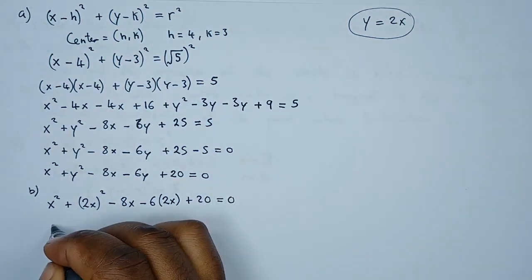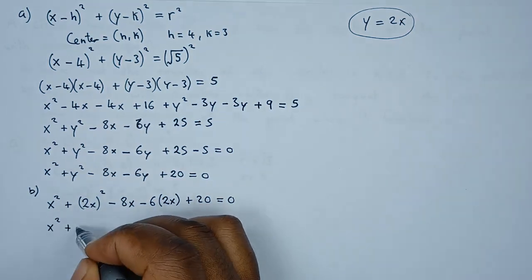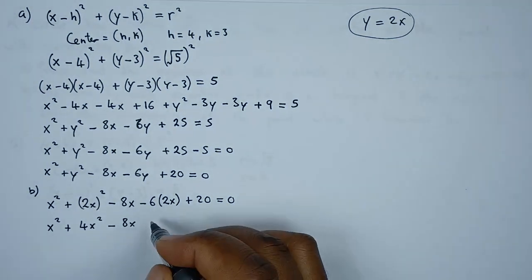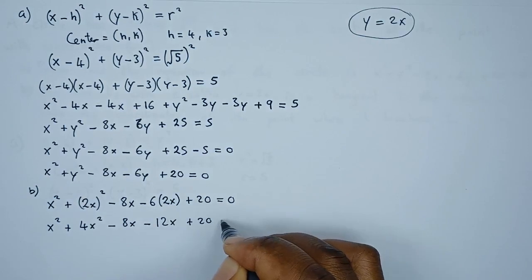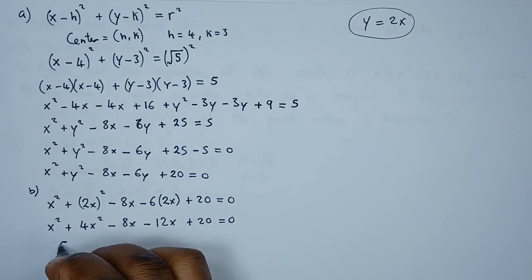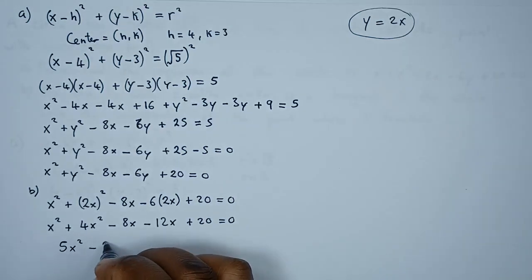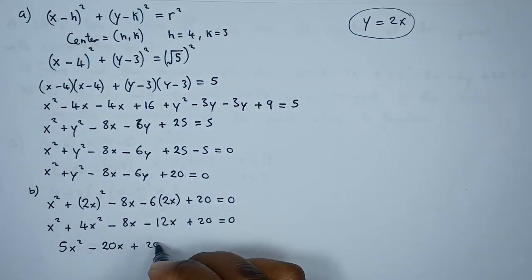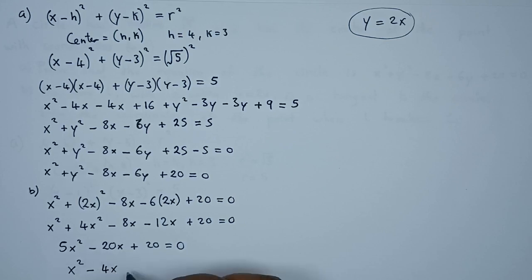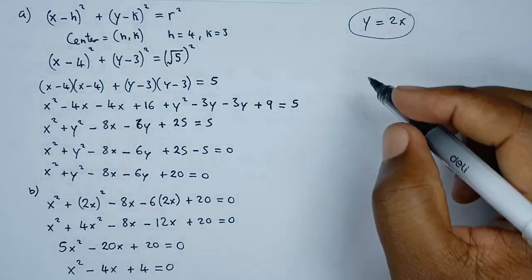Simplifying: x squared plus 4x squared gives 5x squared, then minus 8x minus 12x gives minus 20x, plus 20 equals 0. Dividing throughout by 5 gives x squared minus 4x plus 4 equals 0.